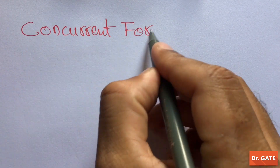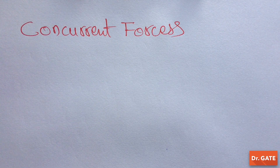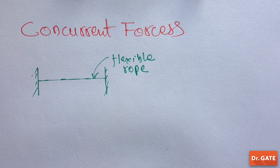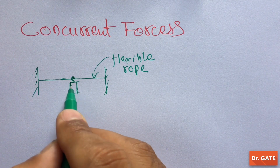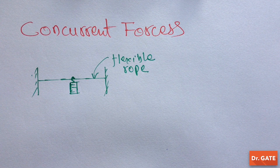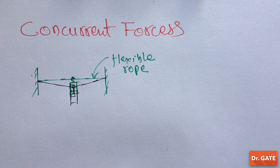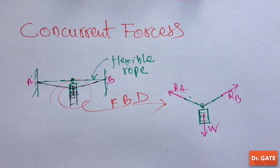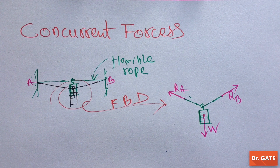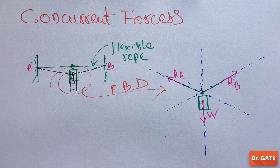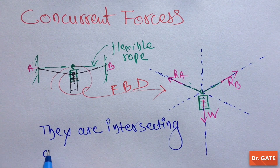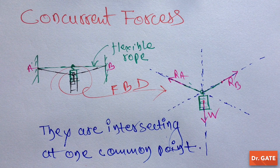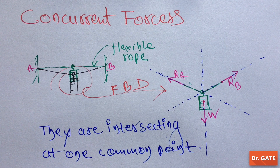Now come to the concurrent forces. To understand this, let's again take a flexible rope with some weight on it. The flexible rope will be deformed, and we have already discussed that the free body diagram of this portion would be this. If we further observe the line of action of these forces, then we will find that these are intersecting at one common point. Then these forces are concurrent forces.